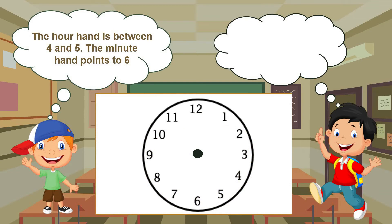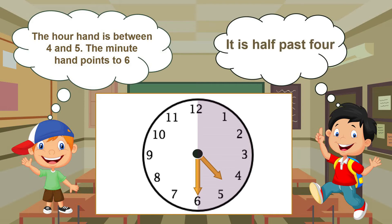Now let's look at this clock. The hour hand is between 4 and 5. Remember, the hour hand is the short hand. The minute hand — the long hand — points to 6. Remember, when the minute hand moves over half of the clock face, it is half an hour. The short hand is after 4, so the time is half past 4.